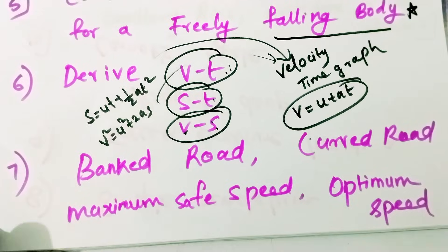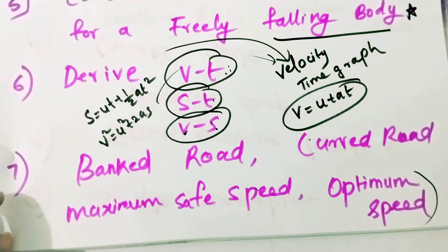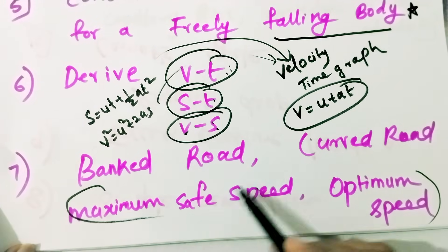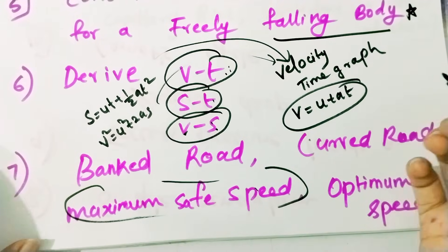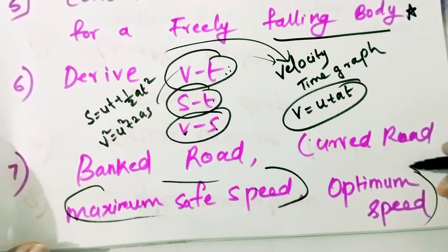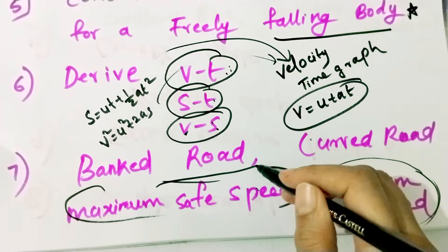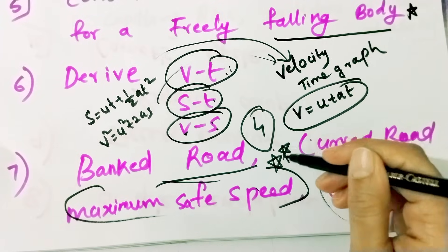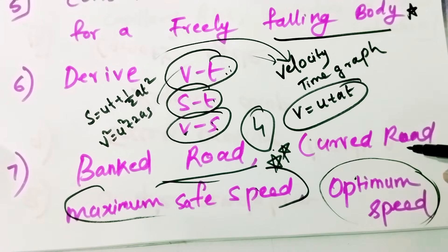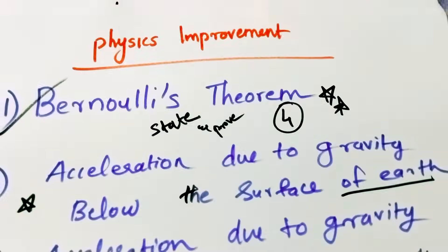Next: Banked Road and Curved Road — Maximum Safe Speed and Optimum Speed. Derive the maximum safe speed of a car on a banked road. Derive an expression for the optimum speed of a car on a banked road — four marks on the derivation. The banked road is important; it is a curved road.